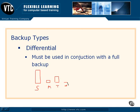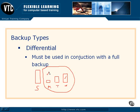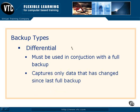Then on Wednesday we do another differential backup — it gets everything that changed on Monday, Tuesday, and Wednesday. Then if we have a failure on Thursday, all we have to do to get back to where we were is restore our full backup and one differential — our last differential backup — and we're back up to where we were. Differentials save you some time on the backup process. They also save you time on the restore process because you only have one file to restore.